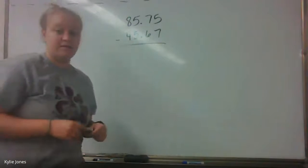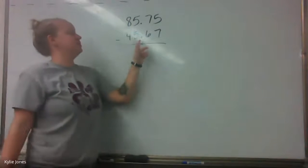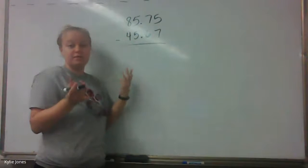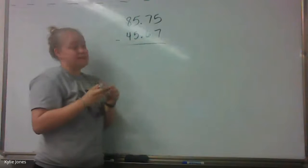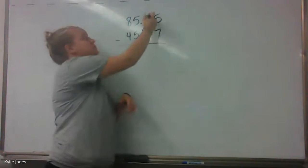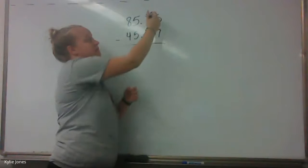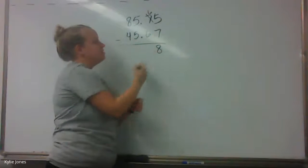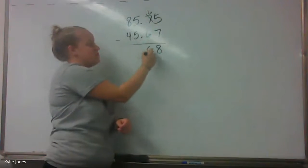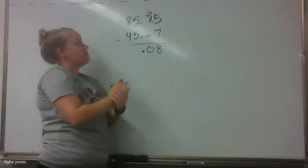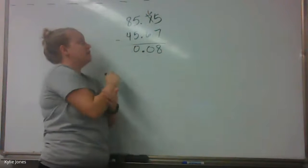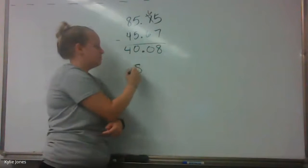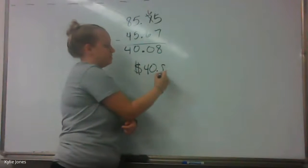Alrighty, I think you guys got enough time, so let's just talk through this problem. The first thing we need to do is line our decimals up. You don't want to do this without lining your decimals up. Luckily, this one just lines up for you. And then we need to subtract. We can't do 5 minus 7, so we need to make sure we borrow. So the 7 becomes a 6, the 5 becomes a 15, and we can do 15 minus 7, which is 8. Then we have 6 minus 6, 0. Drop down your decimal. Then we have 5 minus 5, which is again 0. And then we have 8 minus 4, which is 4. So Jessica has $40.08 left in her bank account.